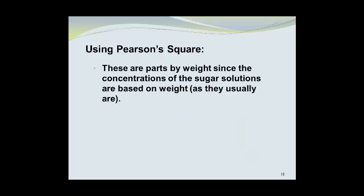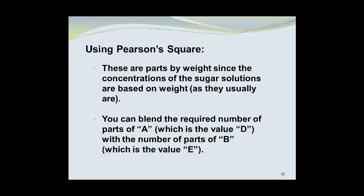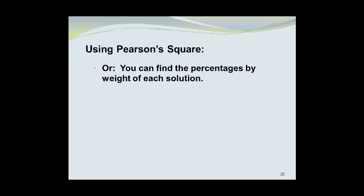These are the parts by weight, since the concentrations of the sugar solutions are based on weight, as they usually are. You can blend the required number of parts of A, which is the value given by D, with the required number of parts of B, which is given by the value E in the diagram. Or you can find the percentages by weight of each solution.